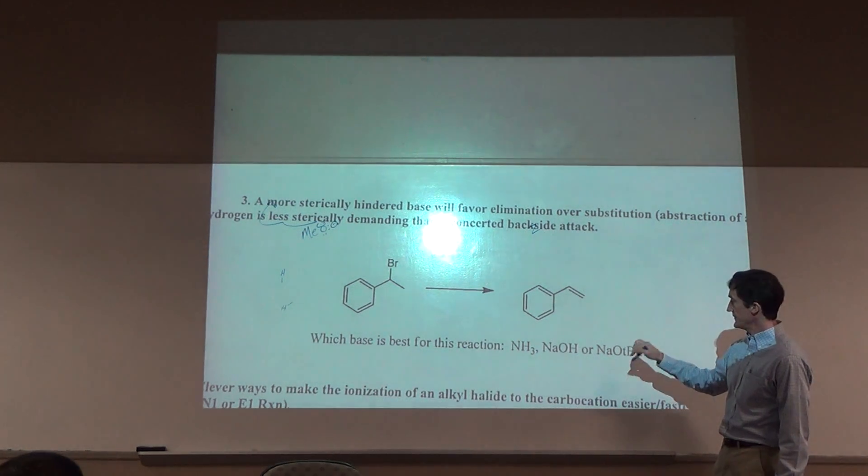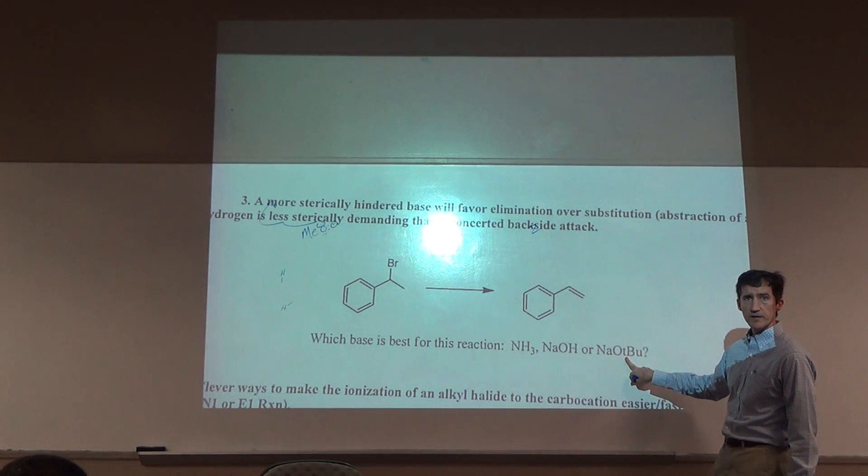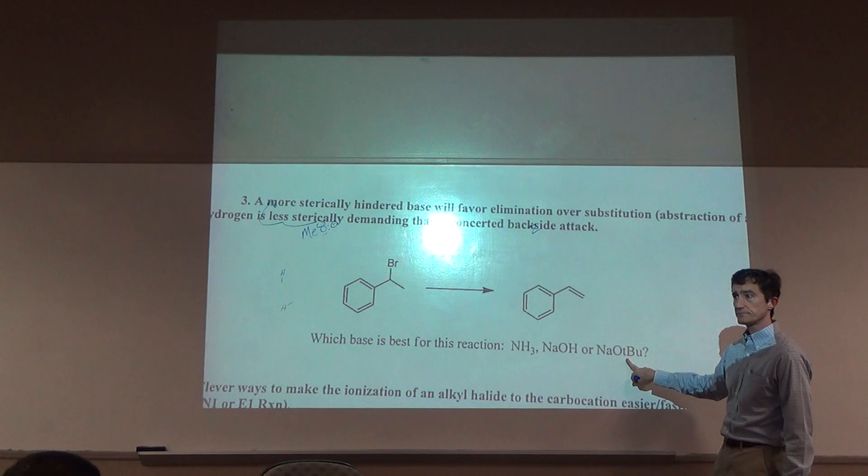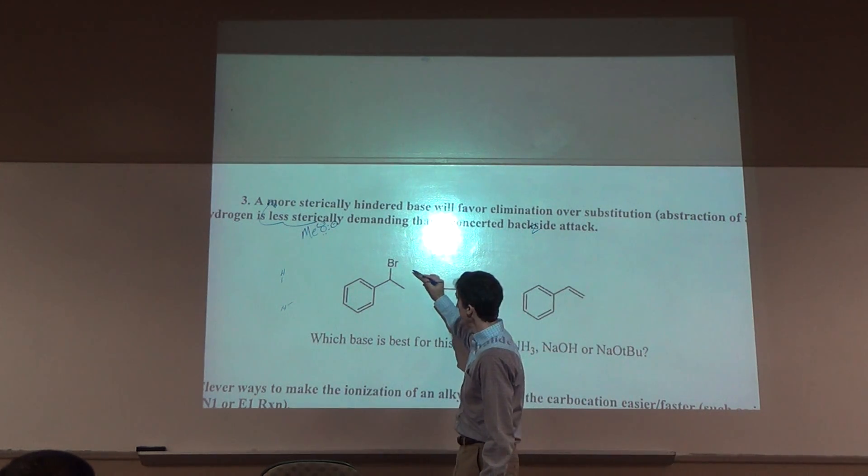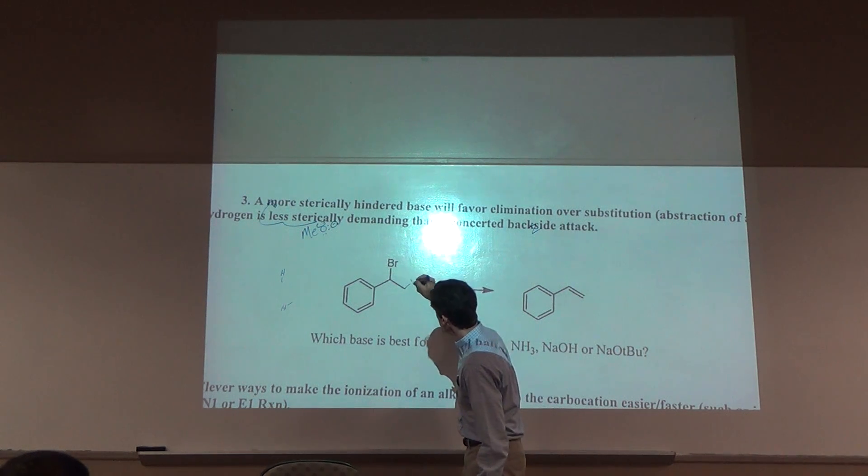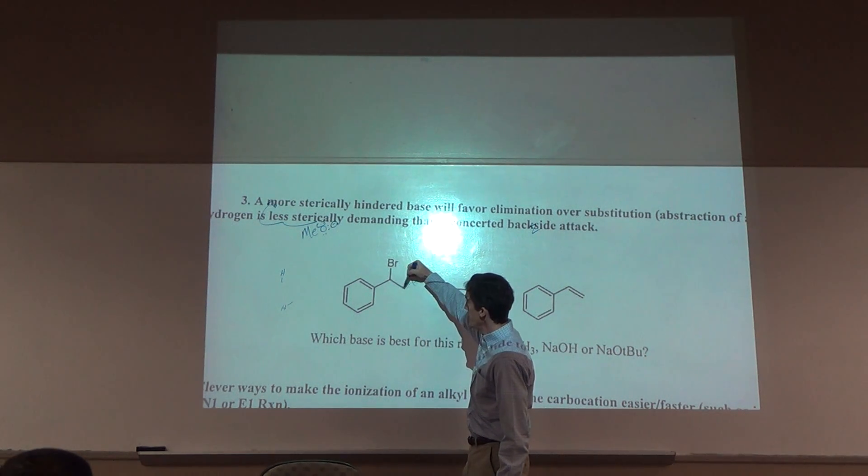Do we have to worry about this giving a Hoffman product because it's too sterically hindered? No. There's only one elimination reaction possible here. There's only one beta-hydrogen. The only place you can put the double bond is here.